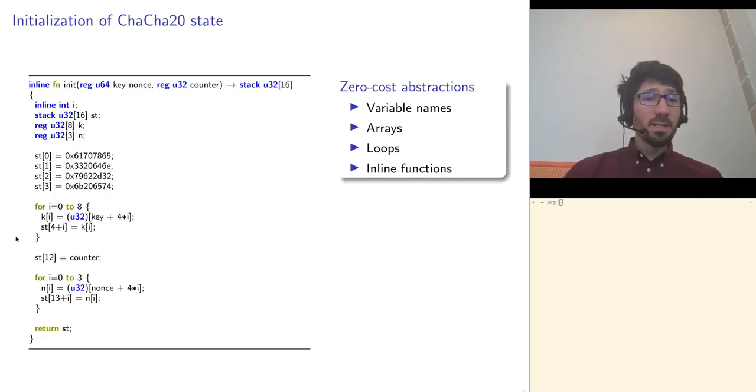Let me now give you a bit of taste of what the Jasmin language looks like. This is extracted from an implementation of ChaCha20, which is a stream cipher which encrypts each block of a message by mixing it with a state. This function here is responsible for initializing these states from a secret key, a nonce, and a counter. What we can observe in this example is that the language provides a few high-level constructions, like functions and loops to structure the code, and also arrays to structure the data.